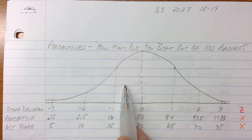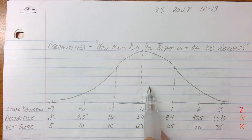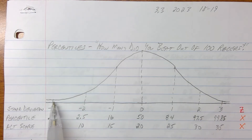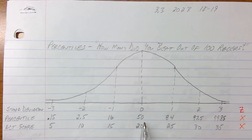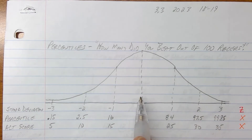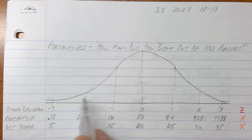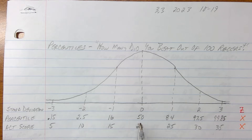This is 68% of the people — 68 out of a hundred people land in here. There's still 32 people out there, so split them in half: about 16 over here and 16 over here. 16 scored kind of low and 16 scored kind of high, but everything's still pretty normal until you get out to where the outliers live. That average score of 20, right in the middle, would be the 50th percentile. That means 50 people are below you and 50 people are above you. If you beat 50 people, you're in the 50th percentile.